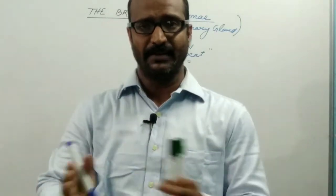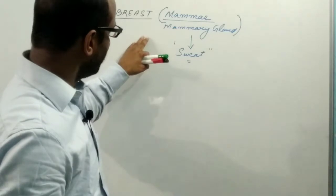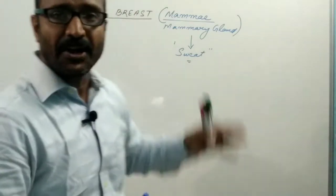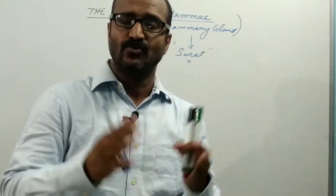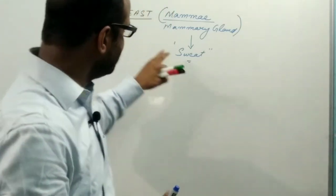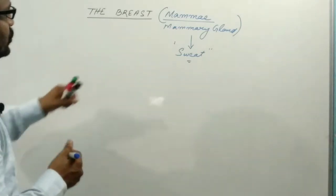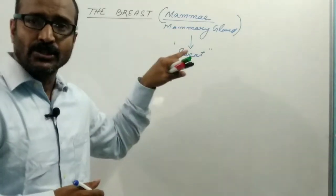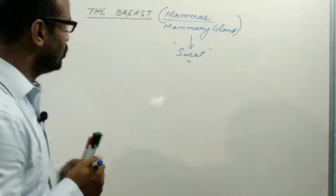A pair of mammary glands is present in both sexes in humans, that is the male and the female. In case of female, the gland is more prominent and developed because it contains alveoli. In case of male, there are no alveoli, so the gland is present in rudimentary form. The mammary gland develops at or after puberty by the action of estrogen and progesterone hormones.